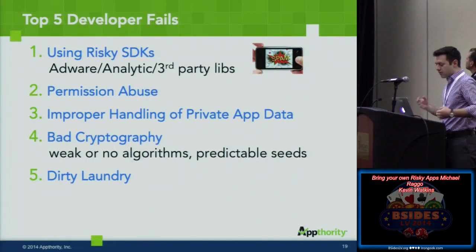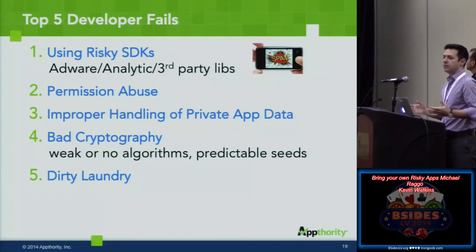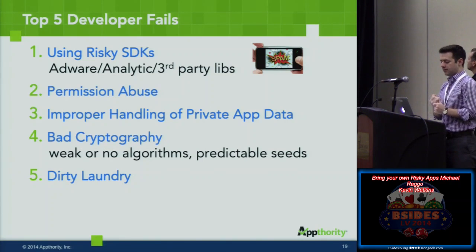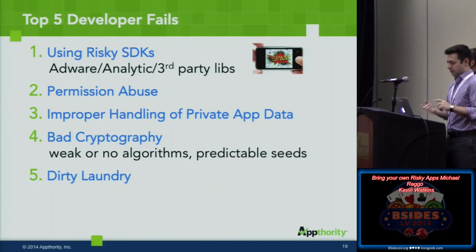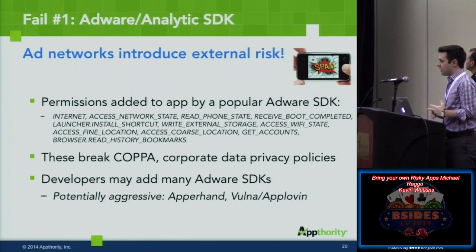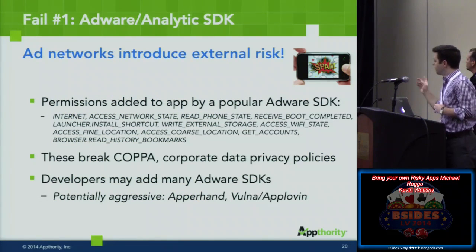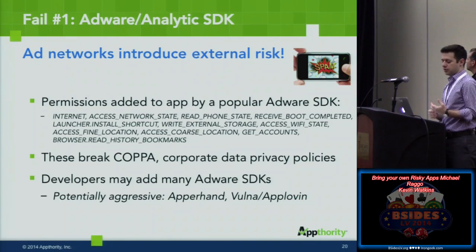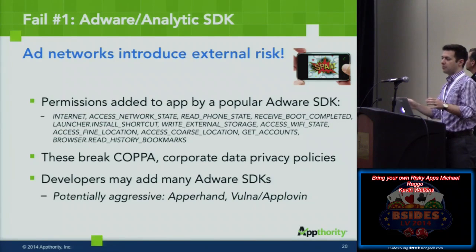What are the top five failures developers are making? These are good people making bad apps — not malicious intent, not malware — but this is a bigger issue because it impacts every app. The failures are: using poor or bad third-party SDKs, permission abuse, improper handling of private data, terrible cryptography, and airing dirty laundry. A lot of times we find a risky app, publish it, and the developer contacts us saying they're not doing that — but we show them the analysis and they did it through an SDK they didn't even know was doing it.